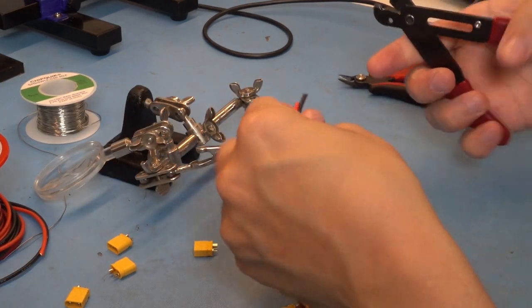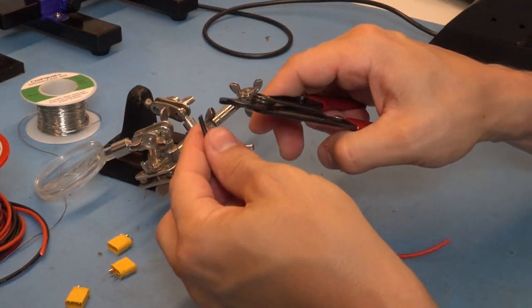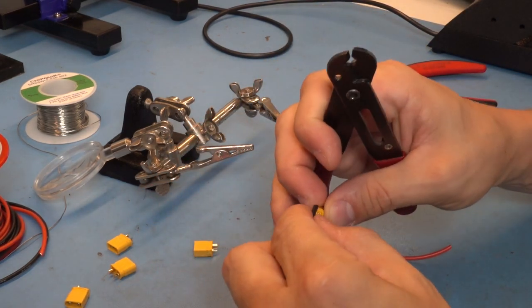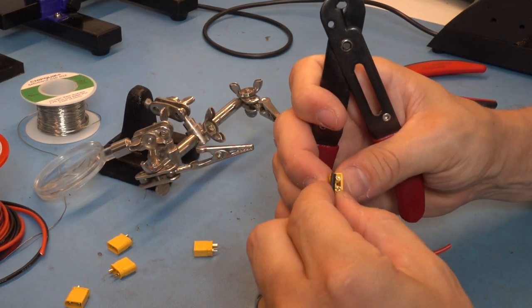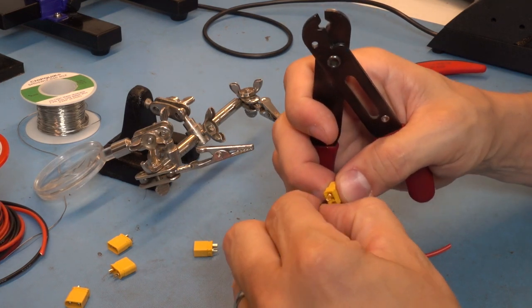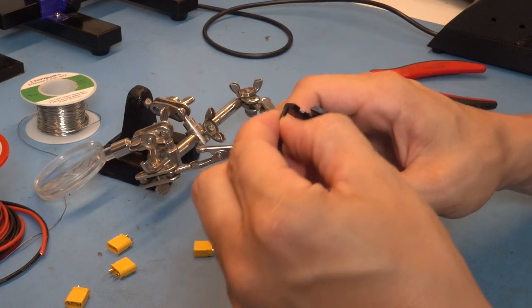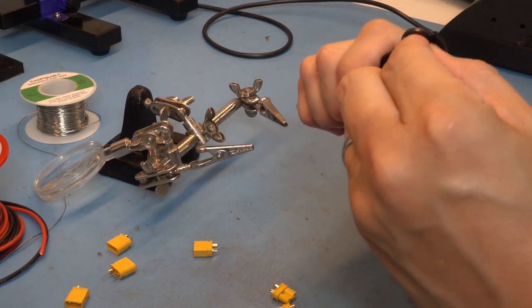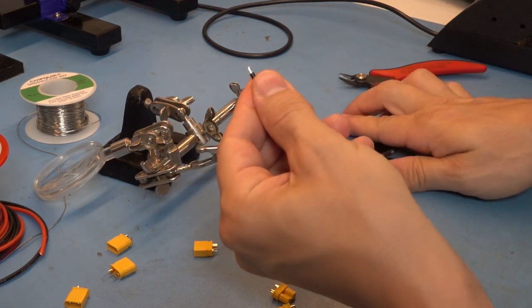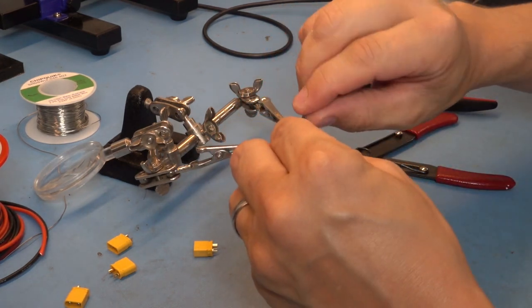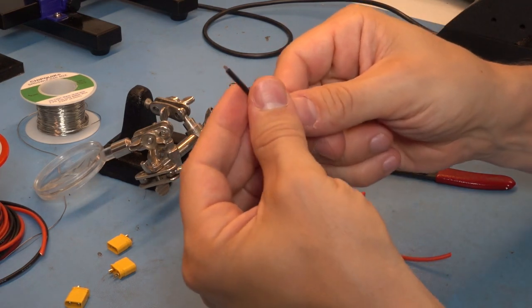Then I'll strip each of these. You want to remove about as much as the length of the terminal—that's maybe two or three millimeters. Try not to nick any of the strands, or at least as few as you can.